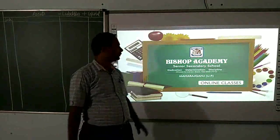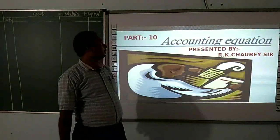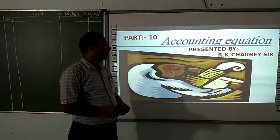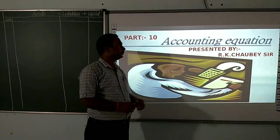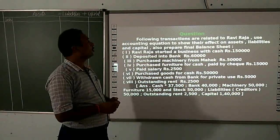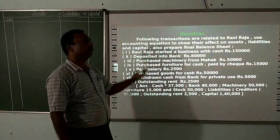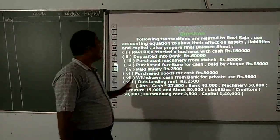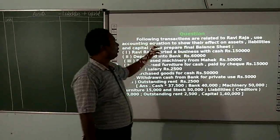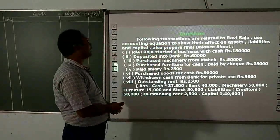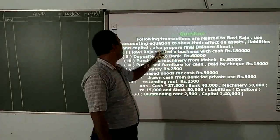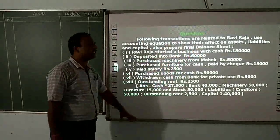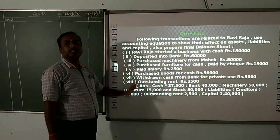Welcome to Bishop Academy Online Classes. In the chapter on the Accounting Equation, we are solving accounting equation problems. Today I am going to solve problems where you have to prepare the accounting equation and then balance it. The question is: following transactions are related to Raviraja — use the accounting equation to show their effect on assets, liability, and capital. Also prepare the final balance sheet.